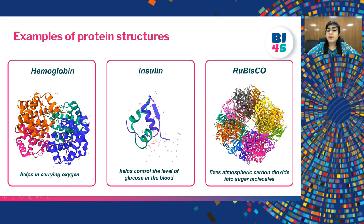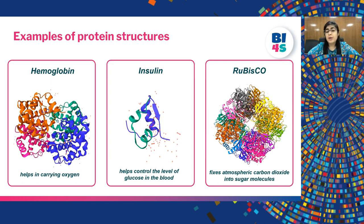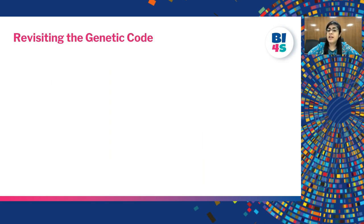These are examples of protein structures. Hemoglobin helps in carrying oxygen throughout the body, insulin maintains blood glucose levels, and rubisco fixes atmospheric carbon dioxide into sugar molecules and is specifically present in plants. This is how these proteins fold themselves to perform their respective functions adequately.